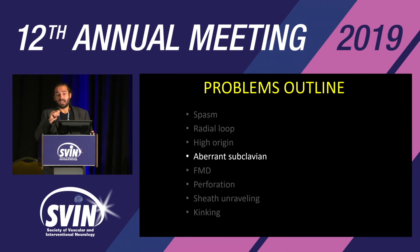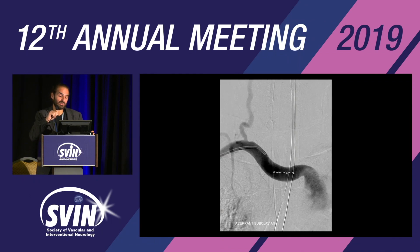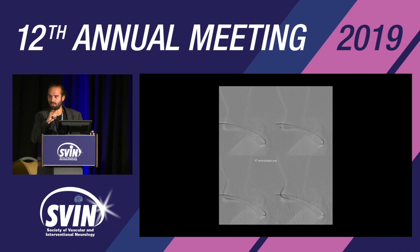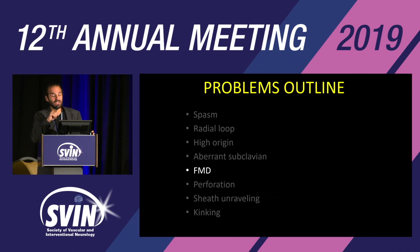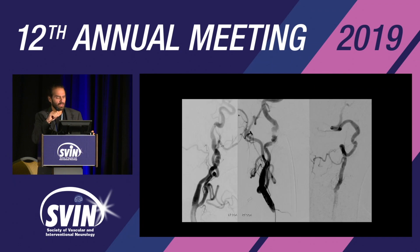Aberrant subclavian: this is the only case we had. We knew it was an aberrant subclavian, but the problem was in the posterior circulation, so it was enough to shoot the vertebral. We answered the clinical question, then were able to complete the rest of the angiogram, but it's not straightforward. If you know about it beforehand from your images, it makes sense to avoid radial access. FMD is not really a problem, just an observation — we didn't know before, but FMD can also involve the brachial arteries. Going through it is not an issue; it just highlights how important it is to get images on your way. This patient also had FMD in the ICAs and vertebral arteries.